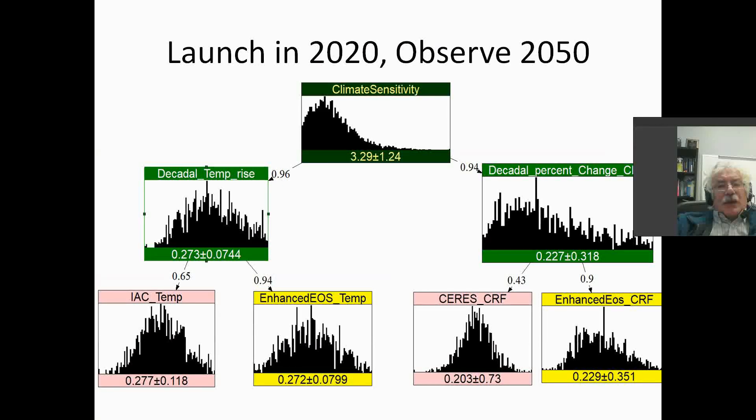We're going to launch the satellites in 2020 and consider observations in the year 2050. In 2050, we've had 30 years of observations, a fair amount of time to observe trends. As a result, the effect of natural variability has been greatly attenuated because natural variability typically has timescales in the order of 10 years.